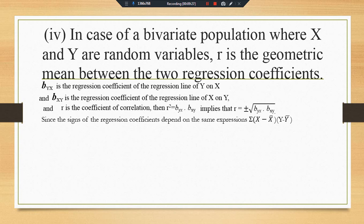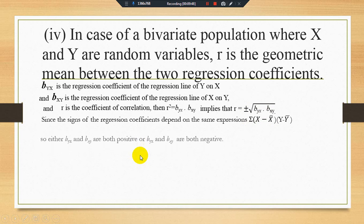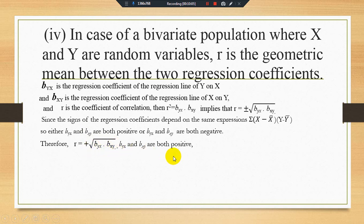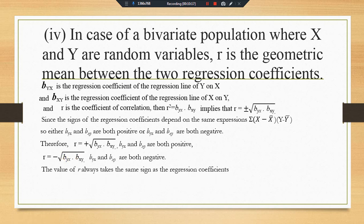Keep in mind that the sign of the regression coefficient depends upon the same expression — summation of (x minus x-bar). If the regression coefficient is negative, don't consider that minus times minus equals plus. The correlation coefficient answer must be negative if both regression coefficients are negative, and positive if both are positive. The value of r always takes the same sign as the regression coefficients.